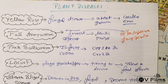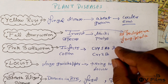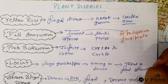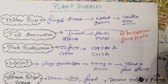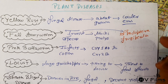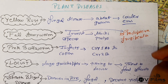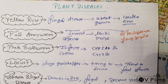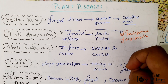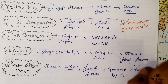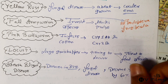The fall army worm is native to America. It was first detected in Karnataka and has since spread to West Bengal and Gujarat as well. They attack crops, particularly maize.